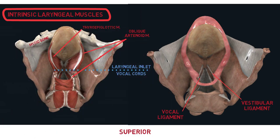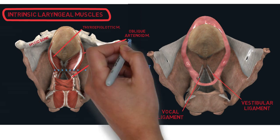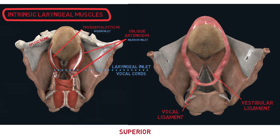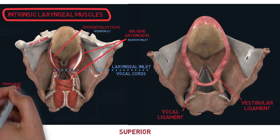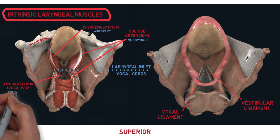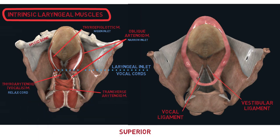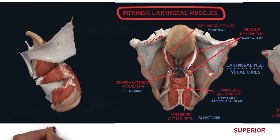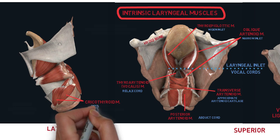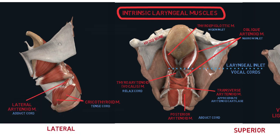The oblique arytenoid muscle and thyroepiglottic muscle control the laryngeal inlet. The first one narrows the inlet, whereas the thyroepiglottic will widen the inlet. Thyroarytenoid is also known as the vocalis muscle; it relaxes the vocal cord. Transverse arytenoid approximates the arytenoid cartilages, and the posterior arytenoid will abduct the cord. From the lateral view, we can see the cricothyroid muscles which tense the cord and lateral arytenoid which will abduct the cord. There are many muscles that hinge on the arytenoid cartilage and all of them involve in vocalization among others.